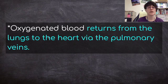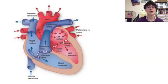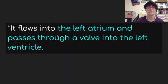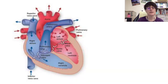Oxygenated blood returns from the lungs to the heart via the pulmonary veins. These arrows are coming from the lungs — you may want to write 'from the lungs' — and they go into the left atrium, collecting there. The blood then flows into the left atrium and passes through a valve into the left ventricle, where it will be pumped again because this is the pumping part of the heart.